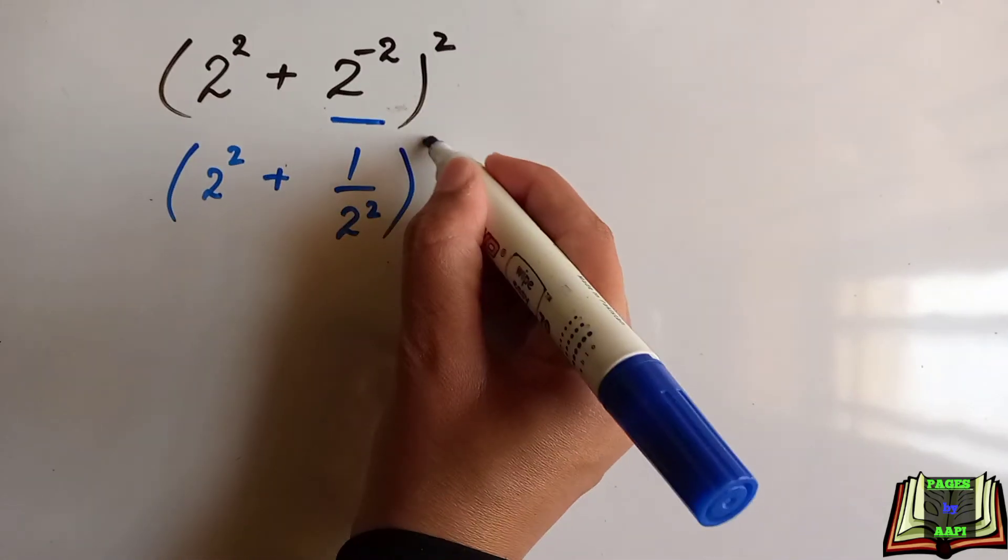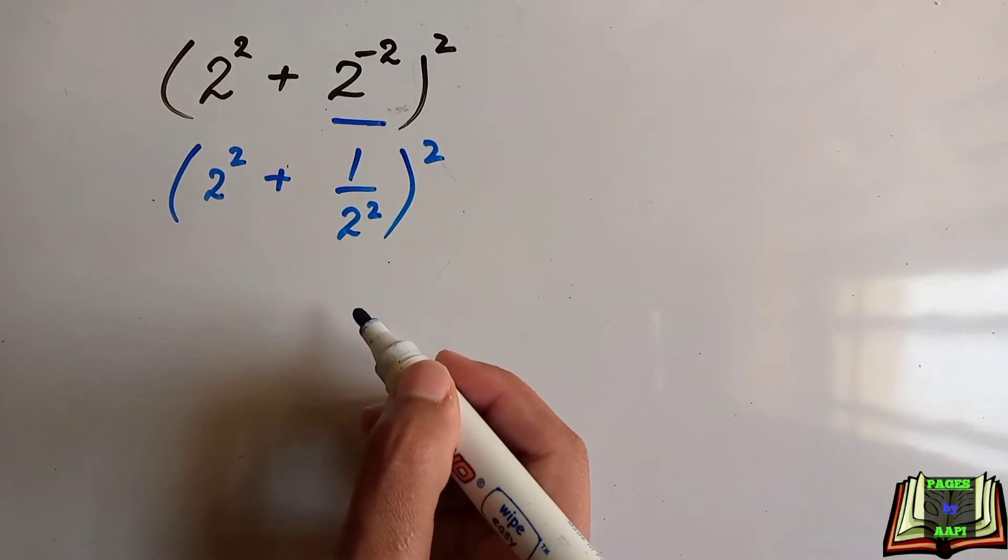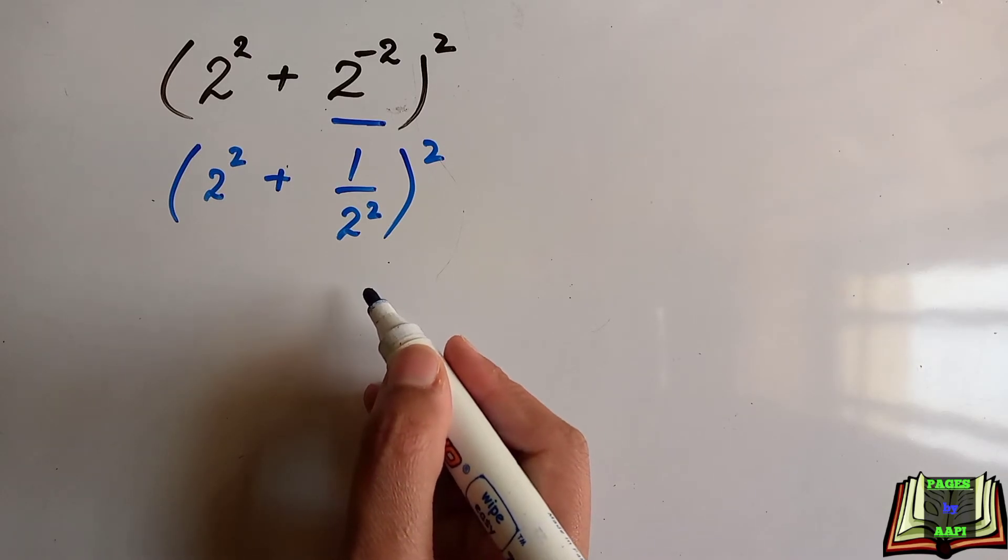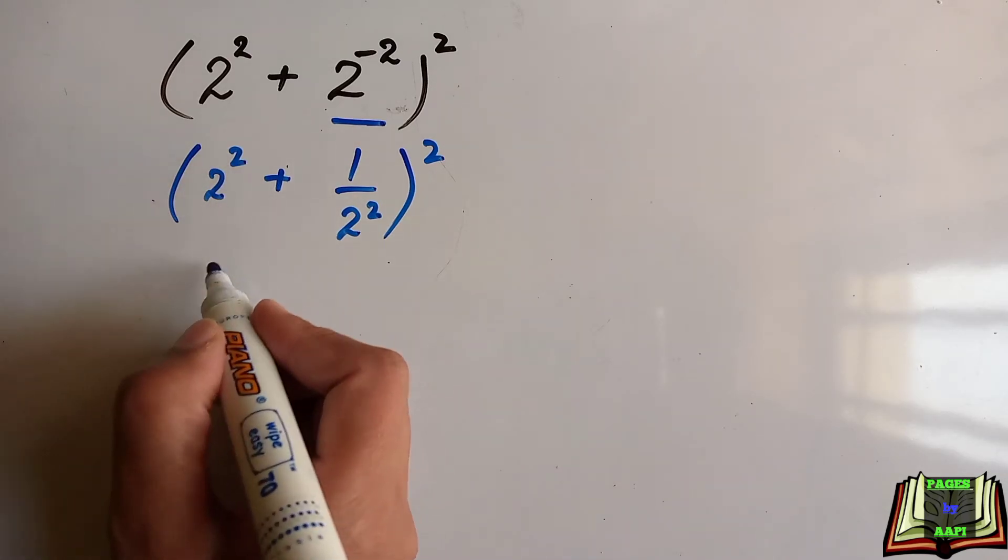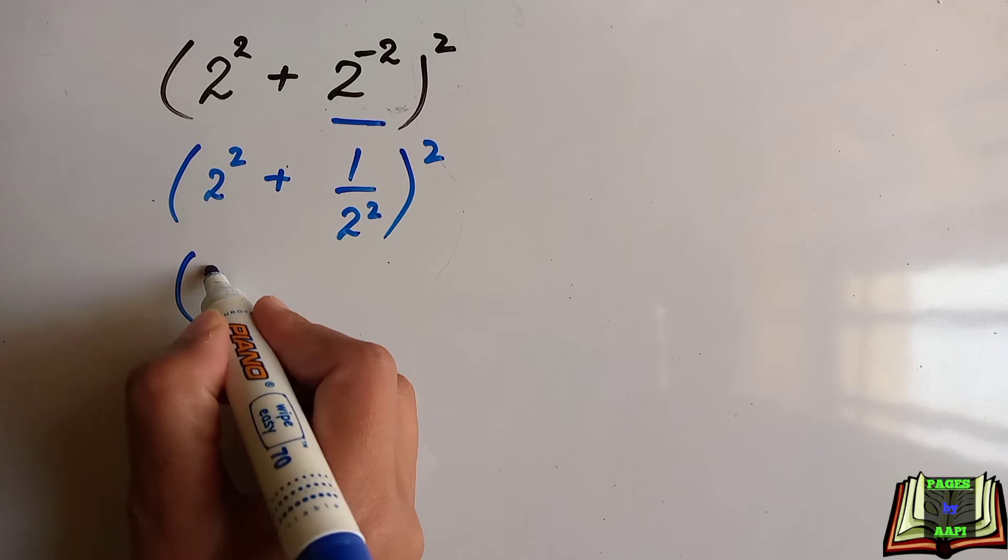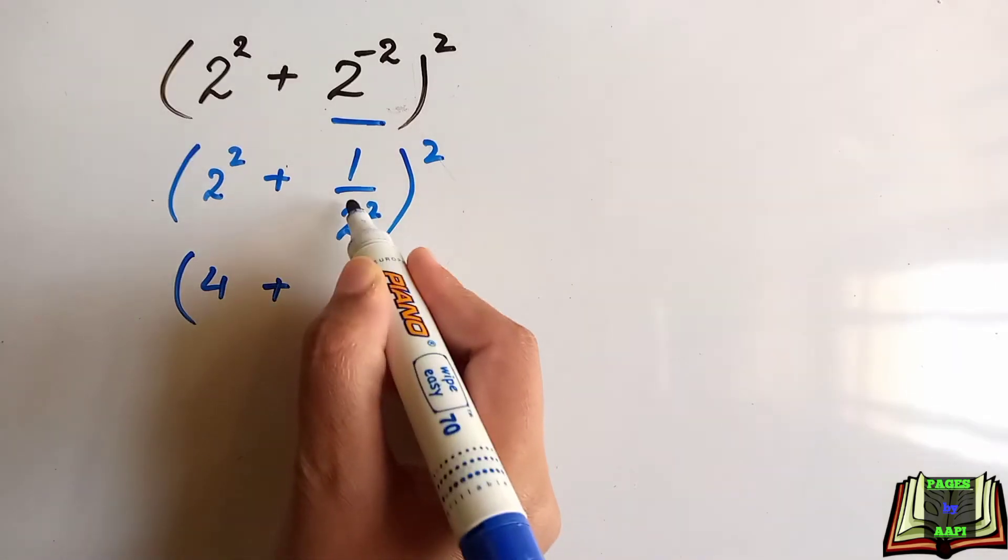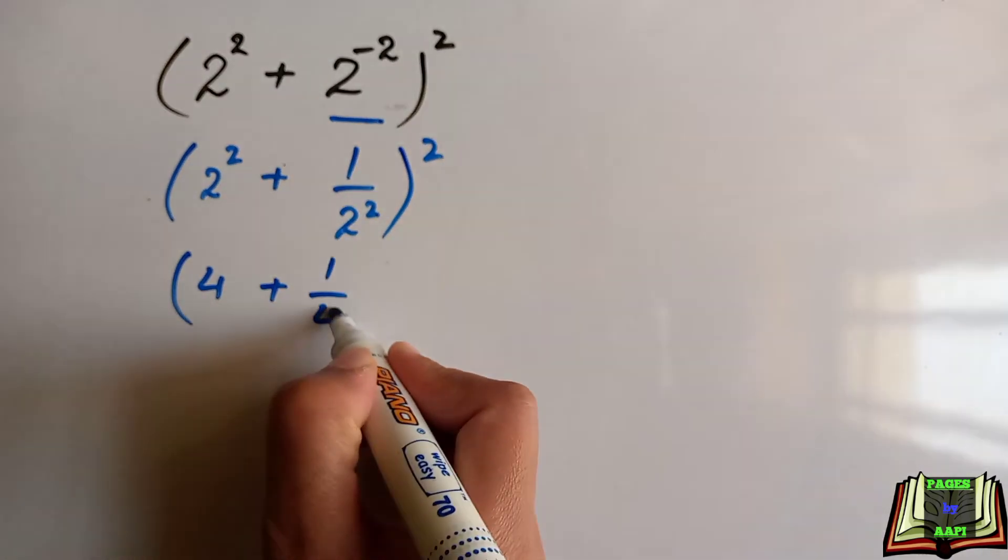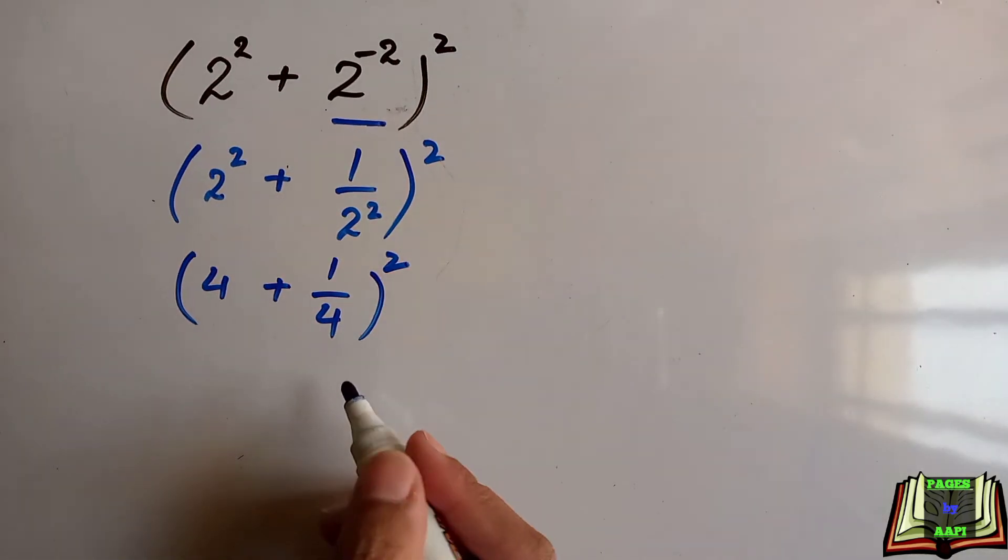Now we will evaluate these powers. 2 to the power 2 is 4, plus 1 over 2 to the power 2 is 4, whole square. Now we have 4 plus 1 over 4, whole square. We need to change this into equivalent fractions.